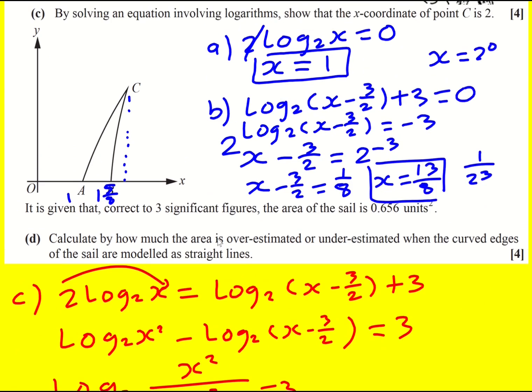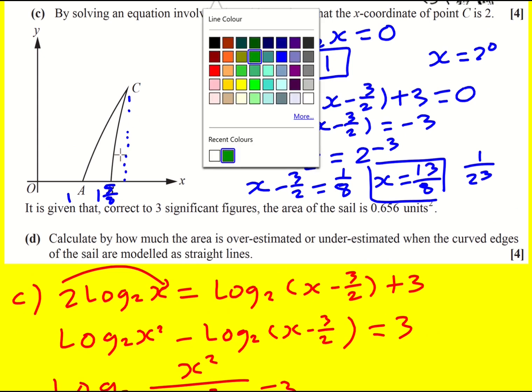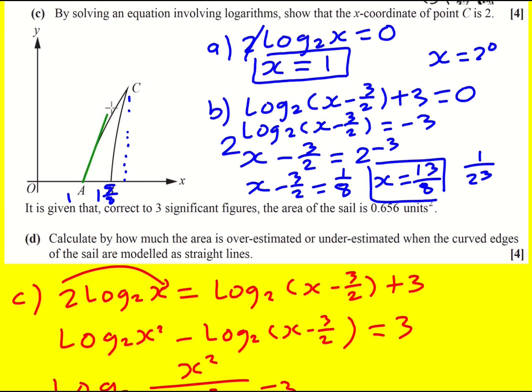Finally, we're told that, correct to three significant figures, the area of the sail is 0.656, and asked how much the area is over or underestimated when the curved edges are modeled as straight lines. So let me get a picture of what's going on. It would be A to C directly and then straight down like that.